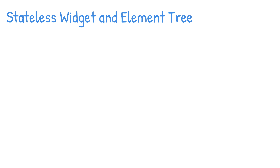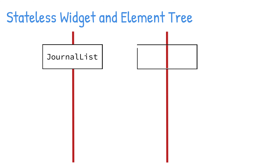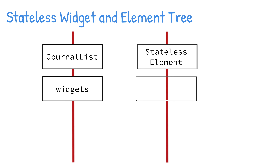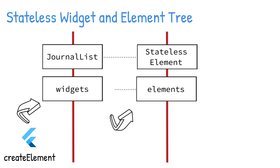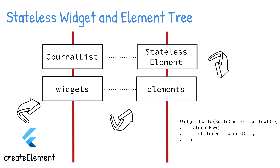A stateless widget has the configuration to create a stateless element. Each stateless widget has a corresponding stateless element. The Flutter framework calls the createElement method to create an instance, and the stateless element is created and mounted to the element tree. The Flutter framework makes a request from the widget to create an element and then mounts it to the element tree. Each element contains a reference back to the widget. The element calls the widget's build method to check for children widgets, and each child widget, like an icon or text, creates its own element and is mounted to the element tree.